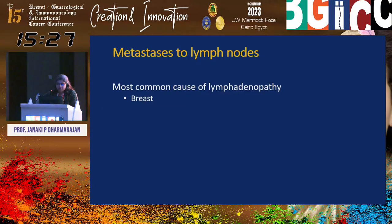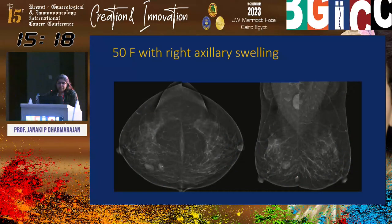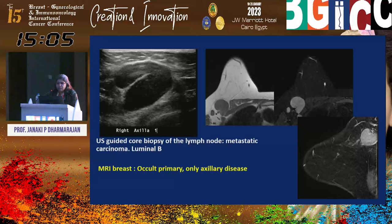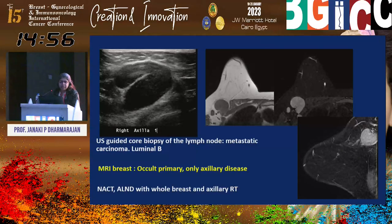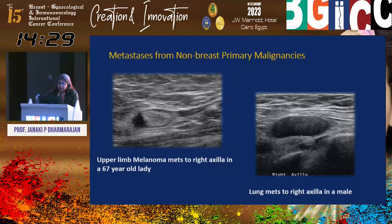Metastasis to lymph nodes most commonly comes from the breast but can also be from non-breast primary — lung, head and neck, face, stomach, ovary, or ipsilateral arm. A 50-year-old lady with a suspicious right axillary node had core biopsy showing metastatic carcinoma luminal B; despite full workup including MRI, no primary was found. The patient was given neoadjuvant chemotherapy and axillary lymph node dissection followed by whole breast and axillary RT — mastectomy was not performed. This case of melanoma in the right upper limb with axillary metastasis, and a male with lung carcinoma presenting with axillary swelling, illustrate non-breast metastases proven by FNAC.